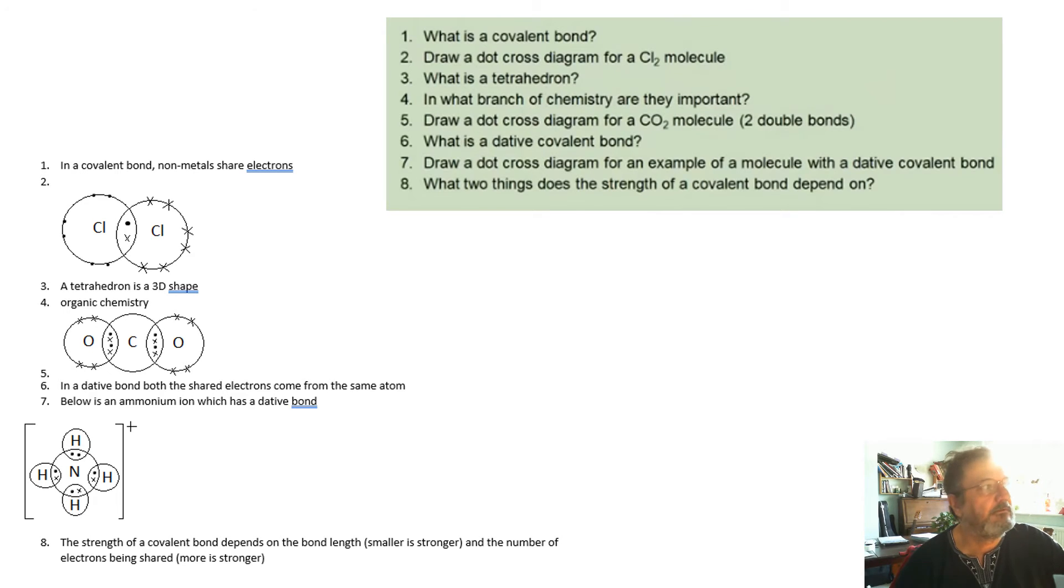That's a double bond on the CO2 molecule. There are two double bonds. A dative bond, also called a coordinate bond, is where both of the electrons come from the same atom. And a good example of that is in that ammonium ion. There is a dative bond.